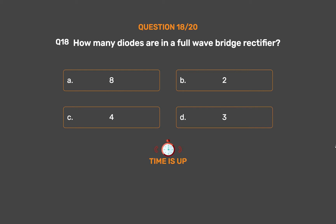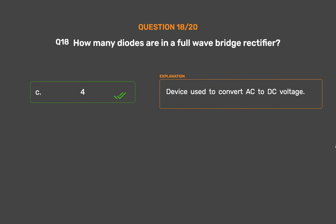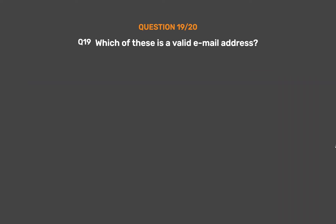The correct answer is Option C: 4. A full wave bridge rectifier is a device used to convert AC to DC voltage.